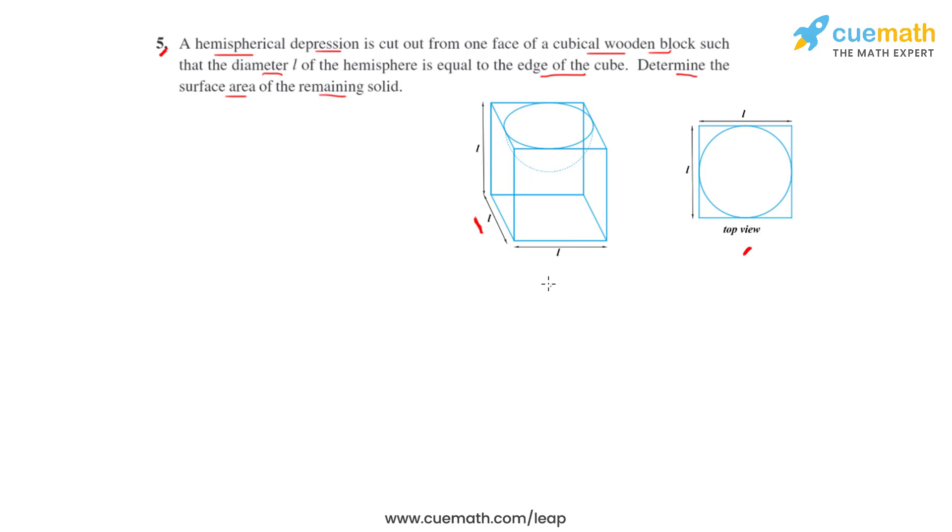So now we can write that the diameter of the hemisphere is L, that is the length of the edge of the cube. Therefore the radius of the hemisphere will be half its diameter, that is L by 2.